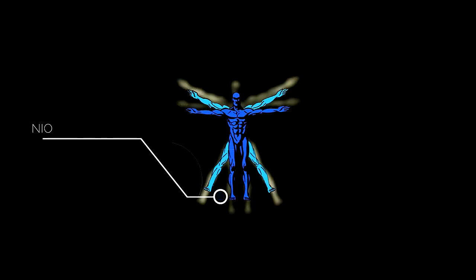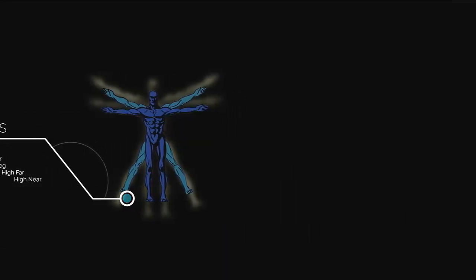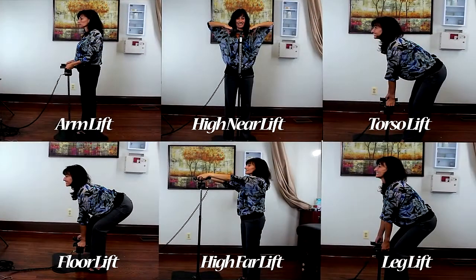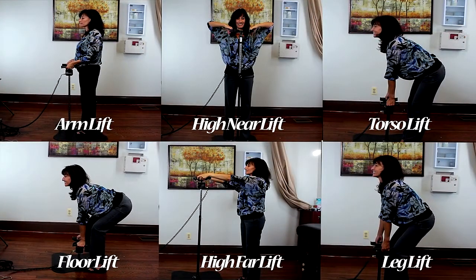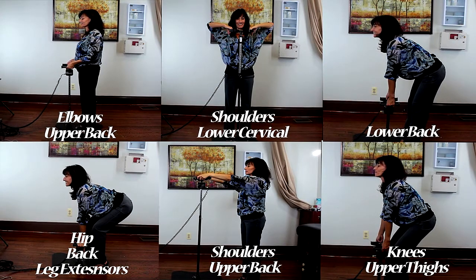The NIOSH lift is a test of the patient's ability to lift weight both maximally and consistently. We have six different lifts that correlate to different muscle groups in the body. These lifts help differentiate which muscles are associated with the injury and rule out those which are not.